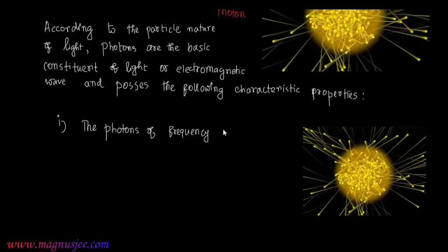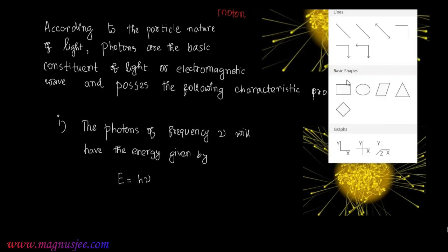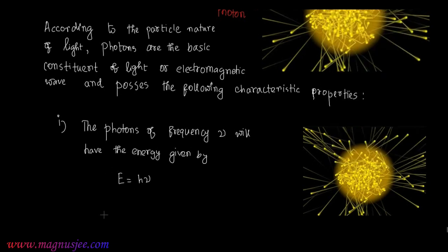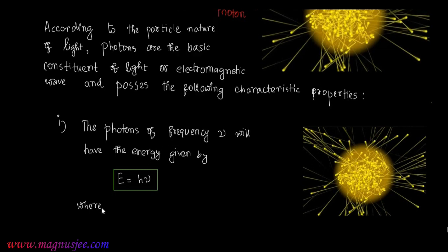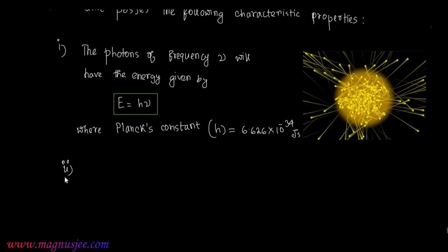Property 1: Photons of frequency nu will have energy given by E = hν, where h is Planck's constant, equal to 6.626 × 10⁻³⁴ joule-second, and nu is the frequency of vibration of photons.